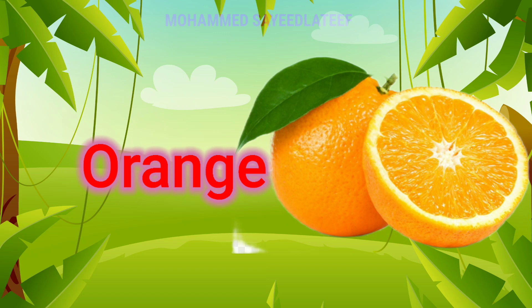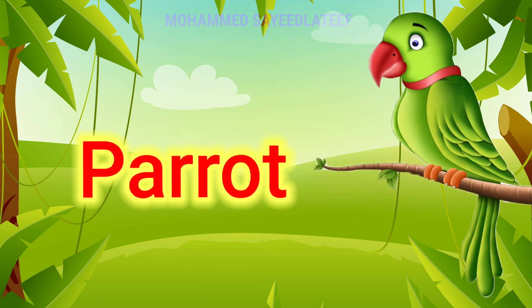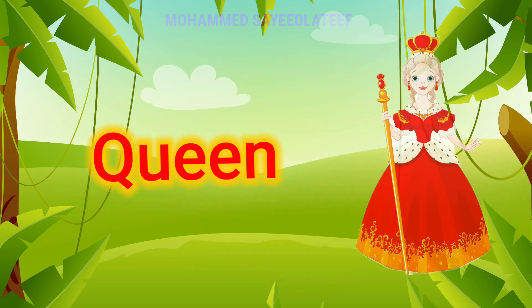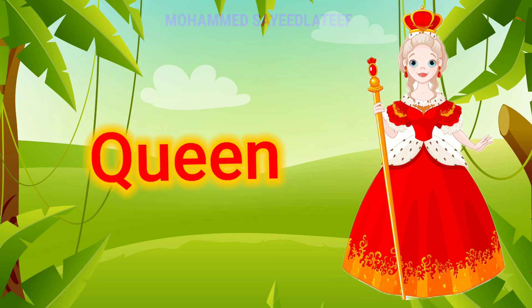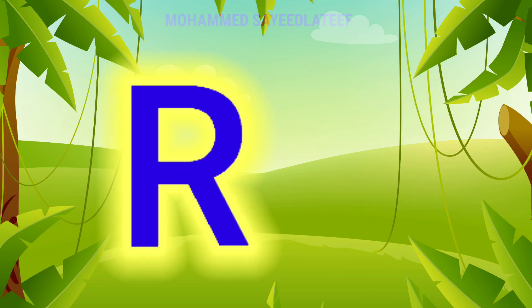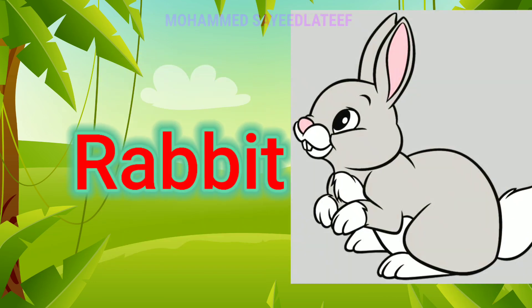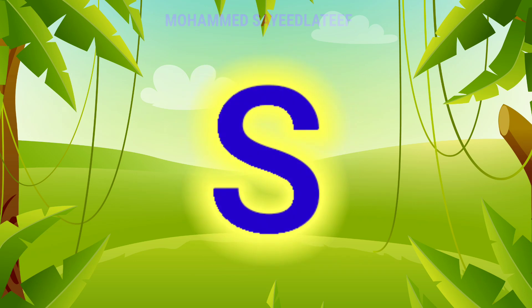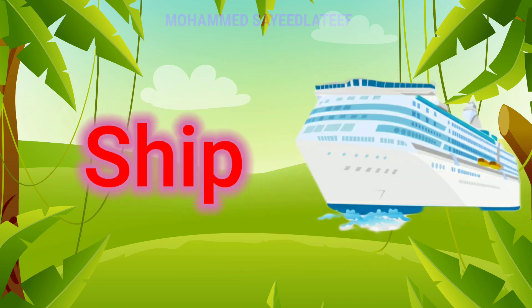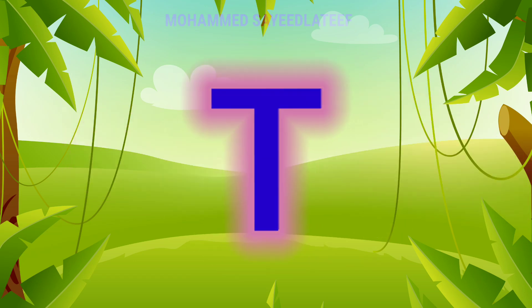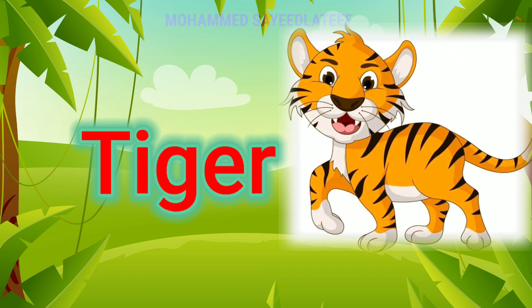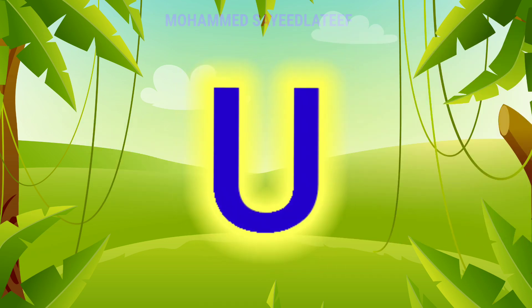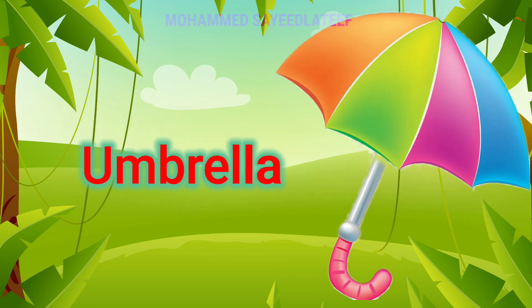N for nest, O for orange, P for barrow, Q for queen, R for rabbit, S for sheep, T for tiger.